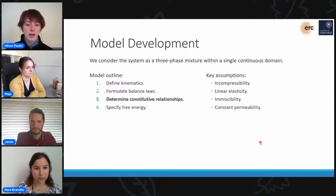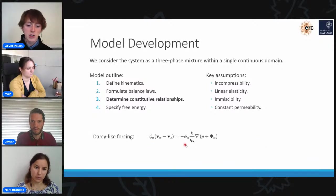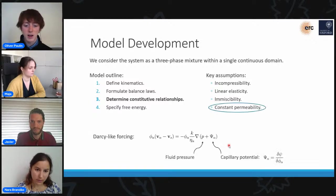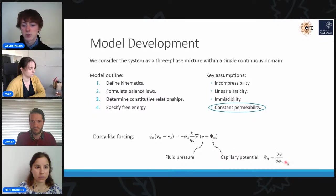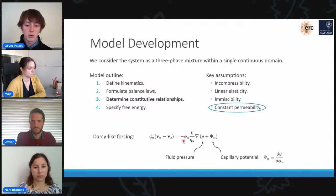For our constitutive relationships, we're going to assume a Darcy-like forcing, so the relative liquid flux on the left here is just proportional to gradients in the pressure. Again, there are two contributions to the pressure here, one from the fluid pressure p that I mentioned in the previous slide, and one due to the capillary potential psi, which we can find by taking variations of the energy that I'll talk about in a moment. A final assumption we make for our model here is that the solid packing is isotropic and has constant permeability. That just means that we have a simple linear pre-factor in front of our gradient term here.